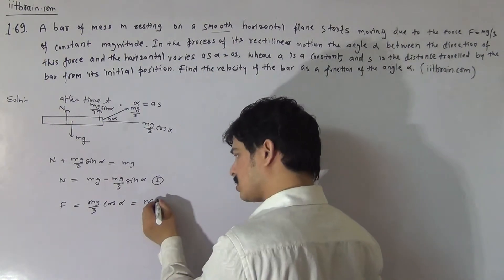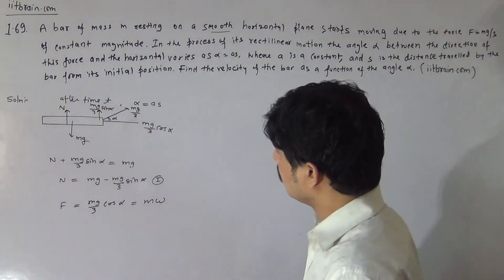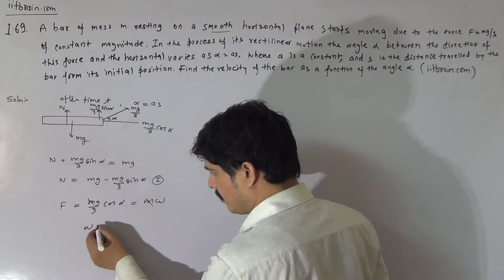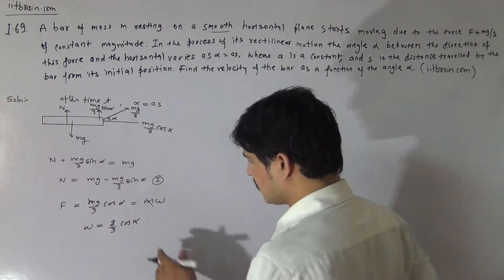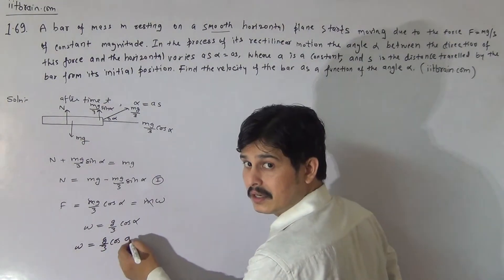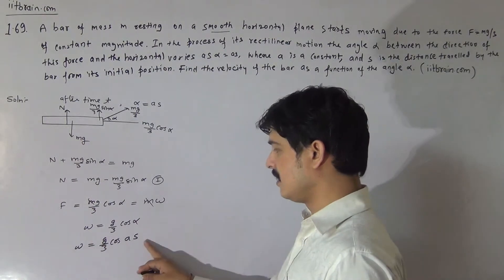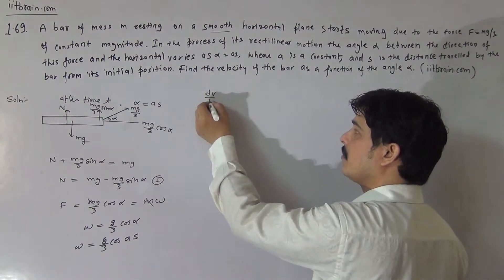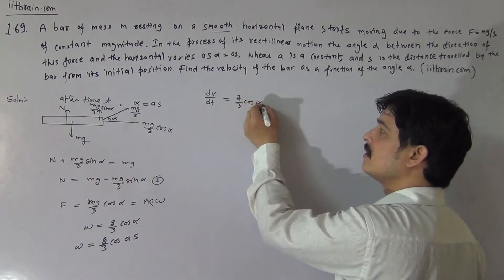Since a is used as a constant, acceleration is represented by the term omega. Now we know that acceleration can be written as dv by dt equal to g by 3 cos alpha, from the horizontal force equation M times acceleration equals Mg by 3 cos alpha.